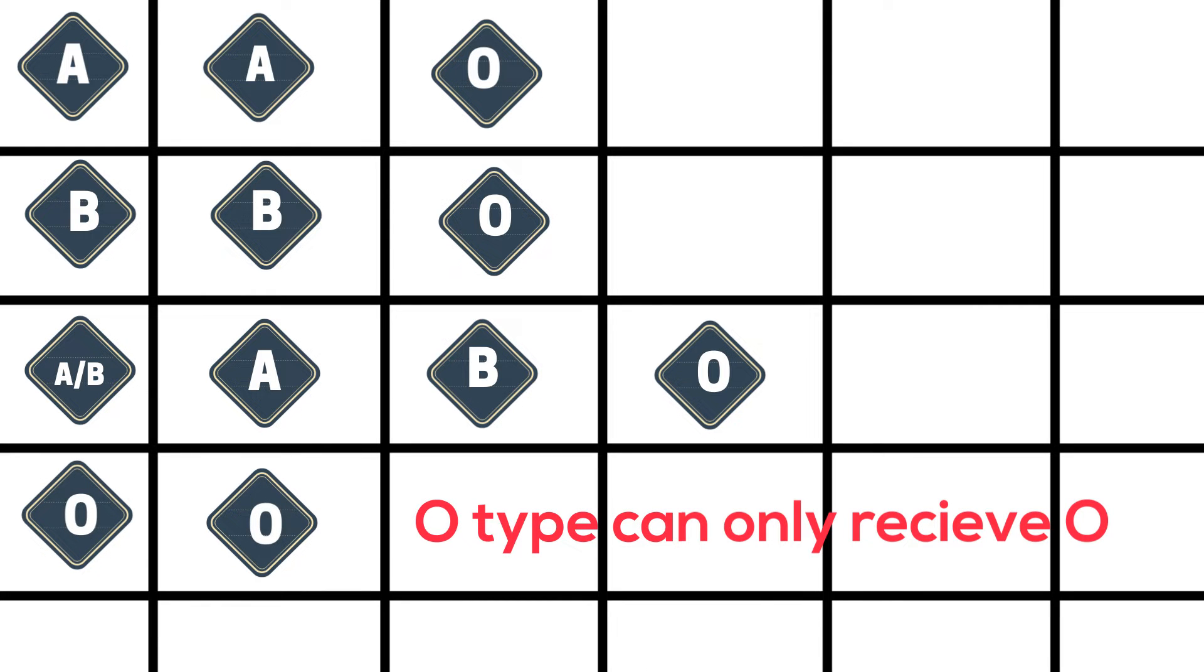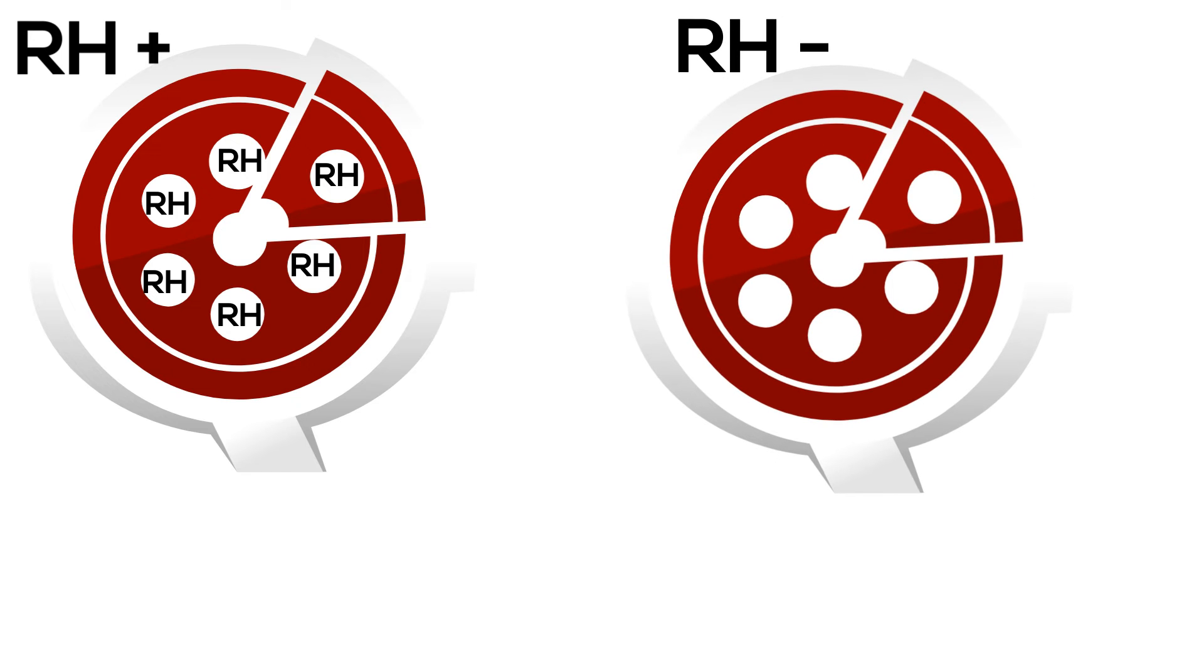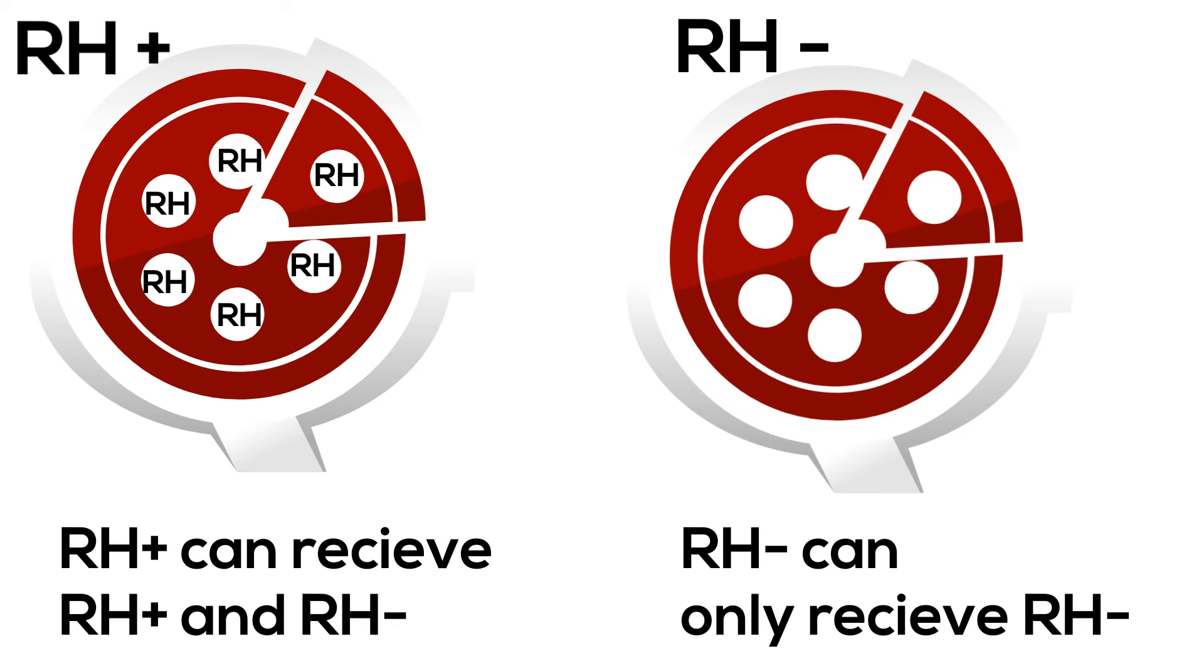In addition, there are other types of antigens called RH. If you are RH positive, then you have RH toppings. If you are RH negative, you do not have any toppings. So therefore, if you are RH positive, you can receive RH positive and negative blood because you recognize these antigens as self.